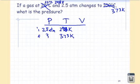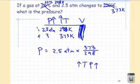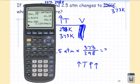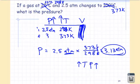Example 3: A gas at 2.5 atmospheres and 298 K changes to 373 K. Volume is not mentioned, so it's the constant — fulcrum is at volume. Temperature is going up, so pressure also goes up. Put the larger number on top: 2.5 times 373 over 298, which equals 3.13 atmospheres. The Kelvin units cancel, leaving atmospheres.